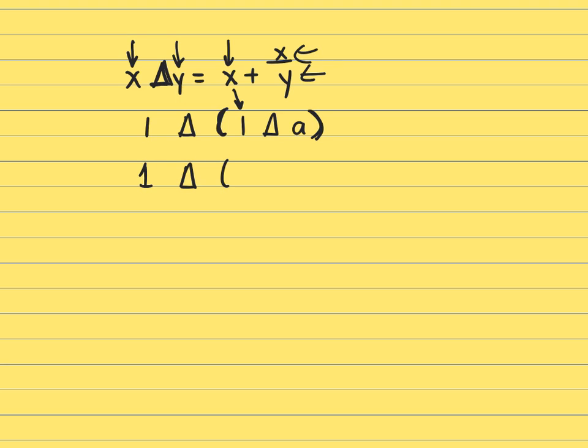Well, there's your x and here's your y. So we're ignoring this piece here. So this is your x and this is your y. So that's going to be one plus one over a.